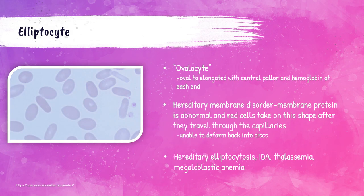These are called elliptocytes or ovalocytes — oval to elongated red blood cells that can look like cigars or egg-shaped. These are associated with red cell membrane protein disorders. Patients will have elliptocytes when they have hereditary elliptocytosis, iron deficiency anemia, megaloblastic anemia, and thalassemia.